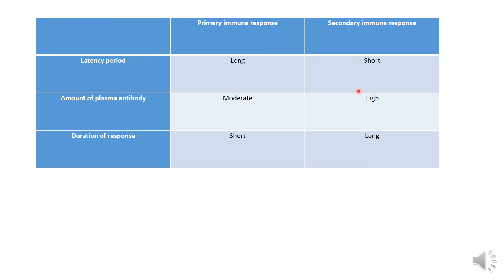Because of the memory cells stored from the first infection, upon the second infection the immune cells directly fight against the pathogen. The amount of plasma antibodies in the primary response is moderate, whereas in the secondary response it is high. The duration of the primary immune response is short, whereas the duration of the secondary immune response is long. Thanks for your attention.